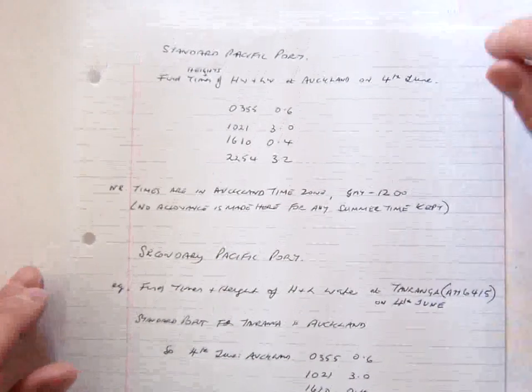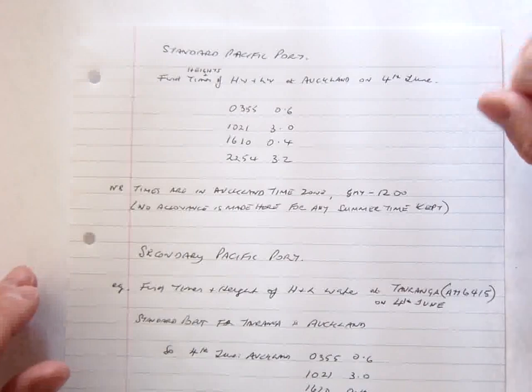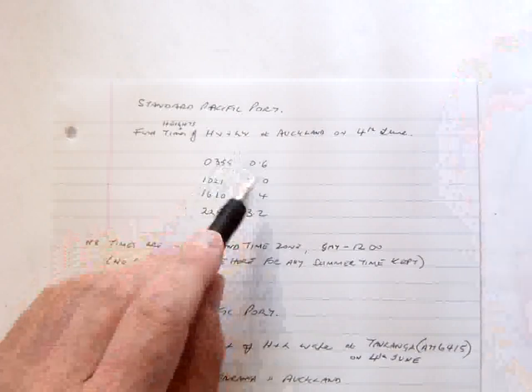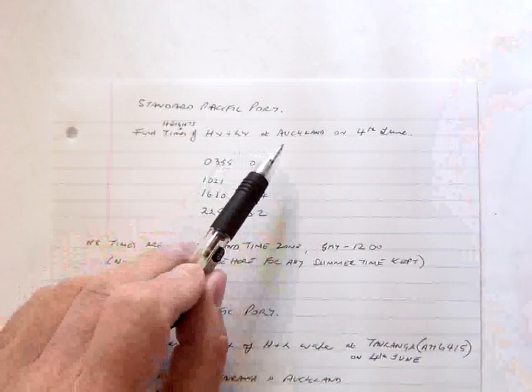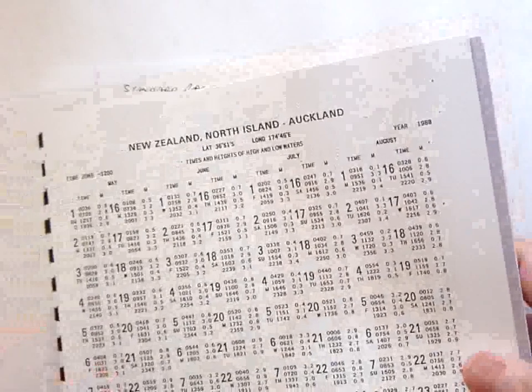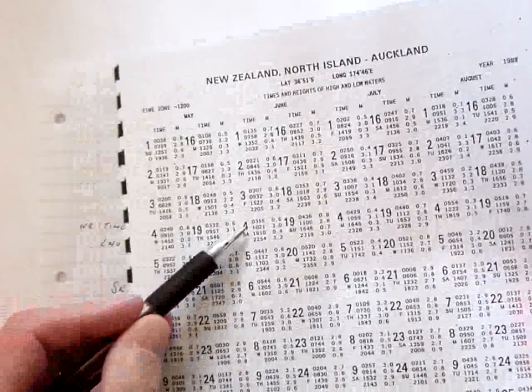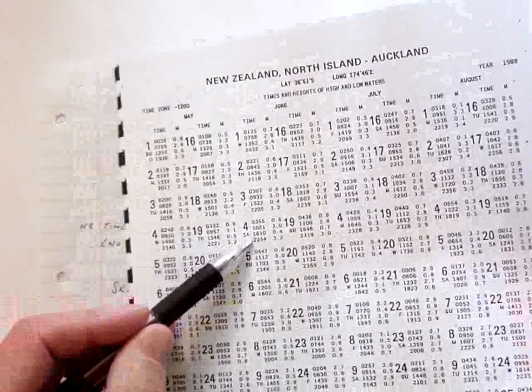So let's first look at looking up for a standard Pacific port, height and times of high water and low water. So we're going to deal with Auckland, which is a standard port, on the 4th of June. So we simply go to the port of Auckland in the tables, look down to the 4th of June and you can see here we've got the times and heights of water, which we've written down there.